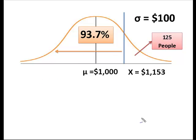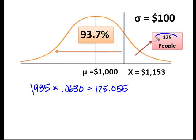What we do know is that 1,985 times 0.0630 is going to equal, drumroll please, 125.055, which for approximating normal distribution and using this information, that's about as close as we are going to get. Now, wasn't that amazing?